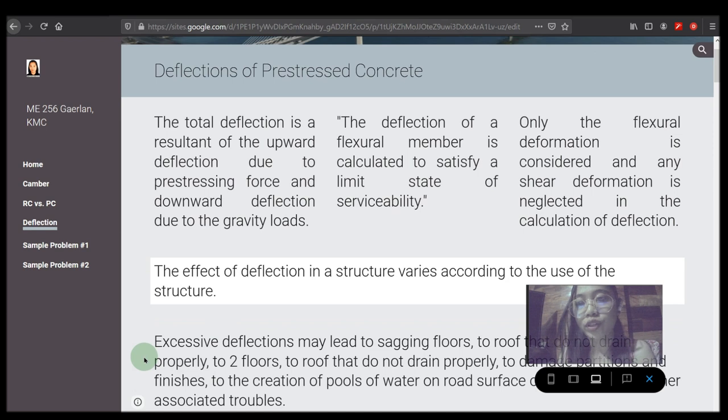The total deflection is a resultant of the upward deflection due to prestressing force and downward deflection due to the gravity load. The deflection of a flexural member is calculated to satisfy a limit state of serviceability. Only the flexural deformation is considered and any shear deformation is neglected in the calculation of deflection.